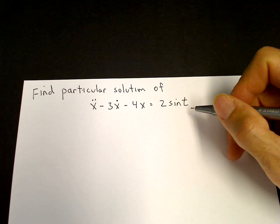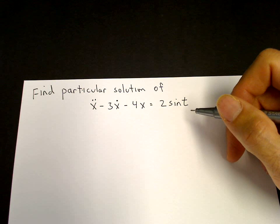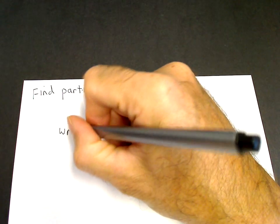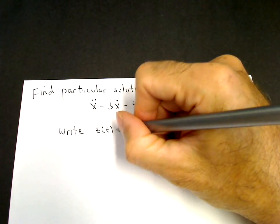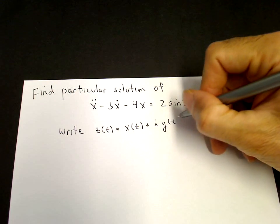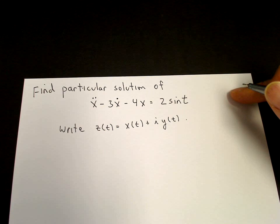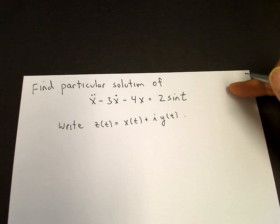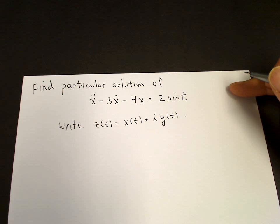We are able to find a particular solution where the inhomogeneous term is an exponential function. We let z, our complex variable, equal x of t plus i y of t. We consider the differential equation for z where the real part of the left-hand side equals the real part of the right-hand side, which is just the equation for x. So I need to write sine t in terms of the real part of an exponential function.